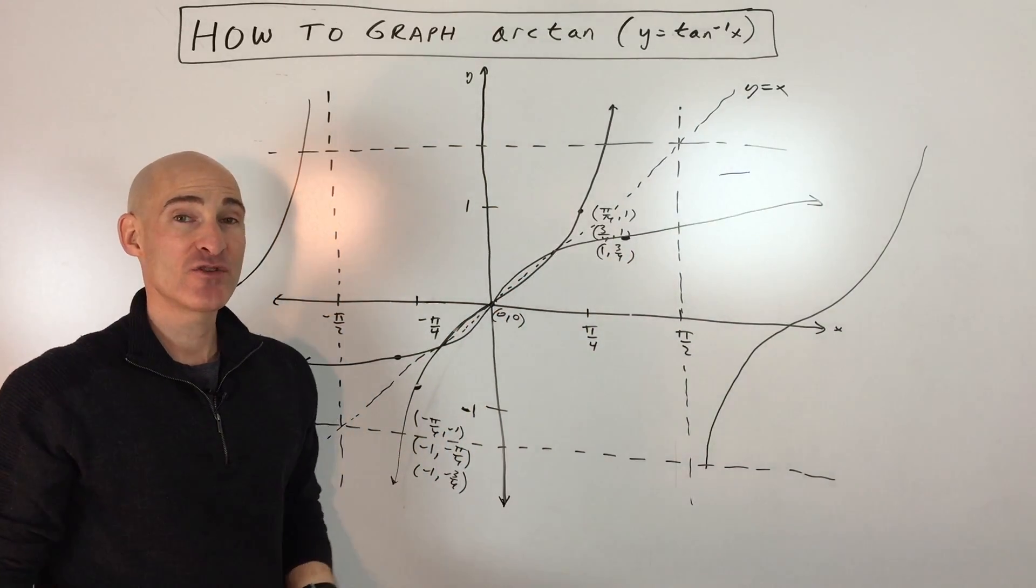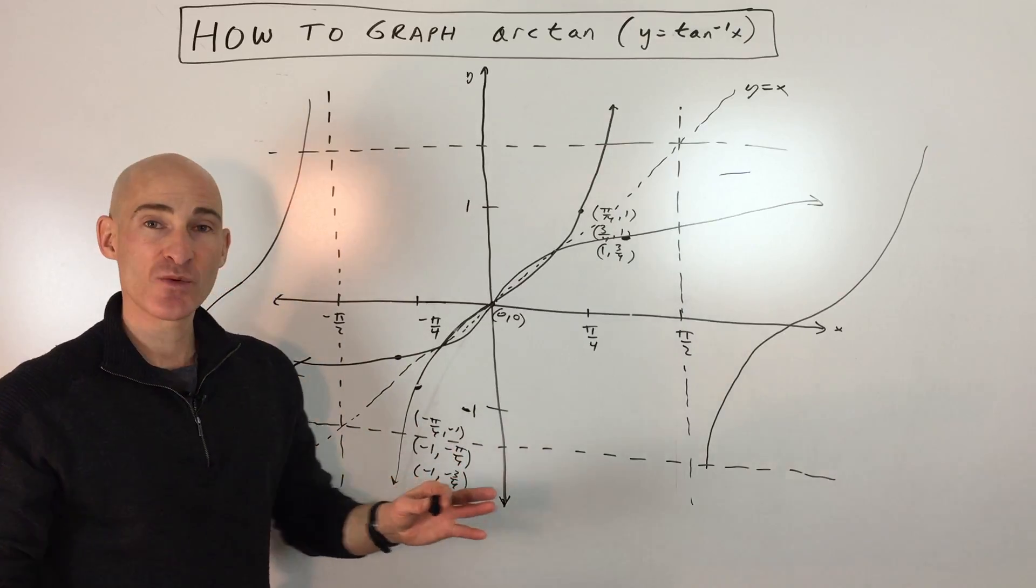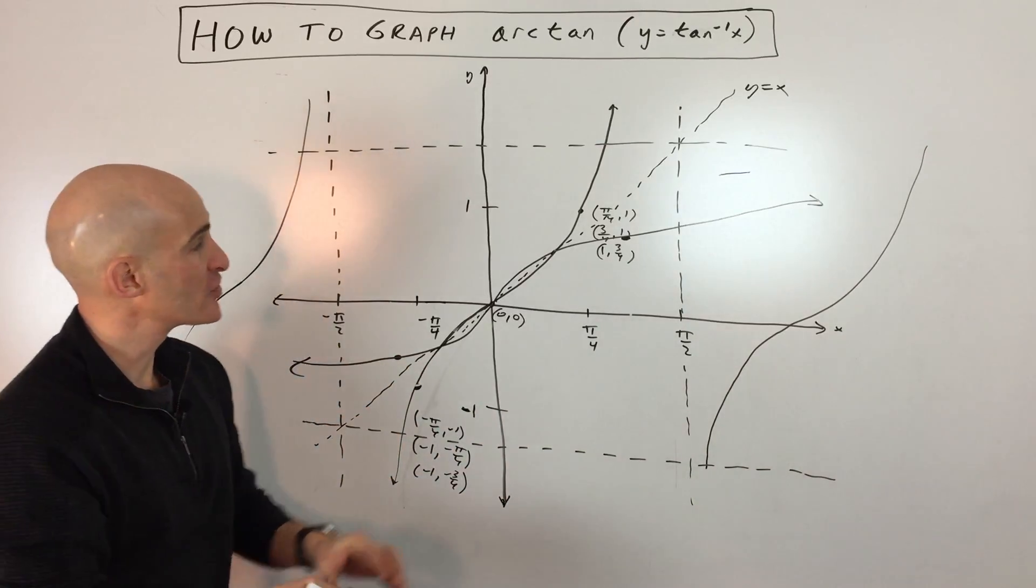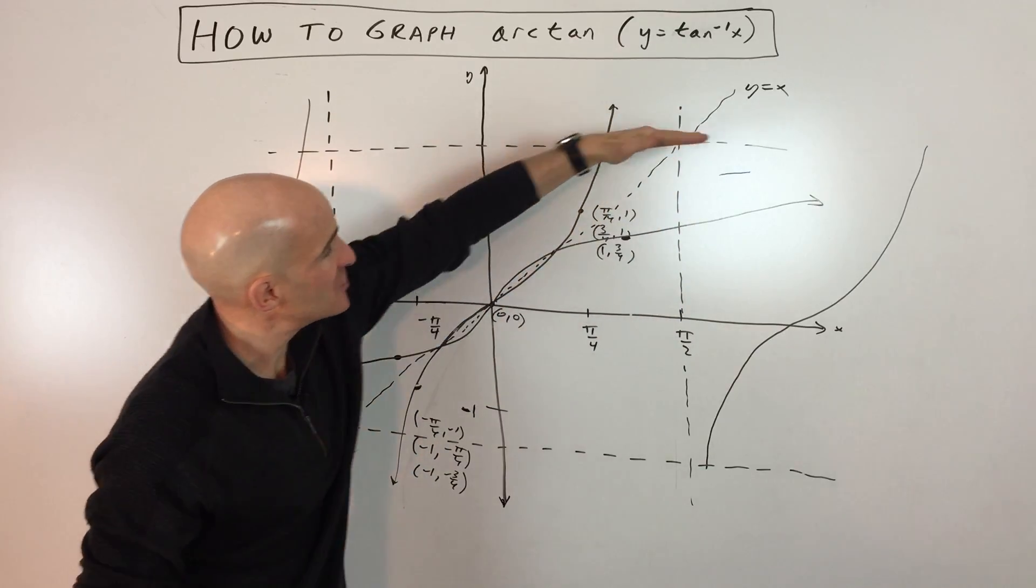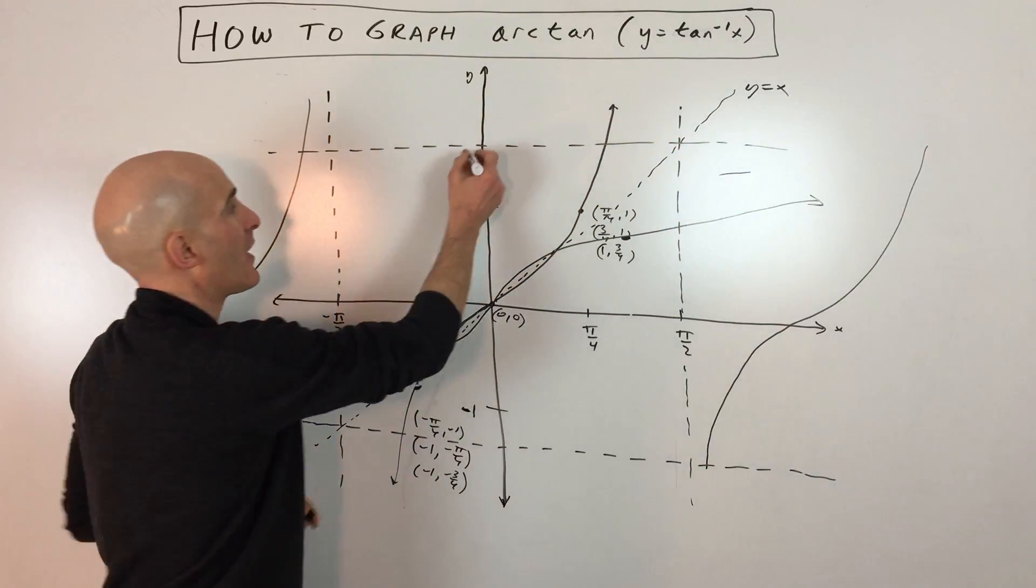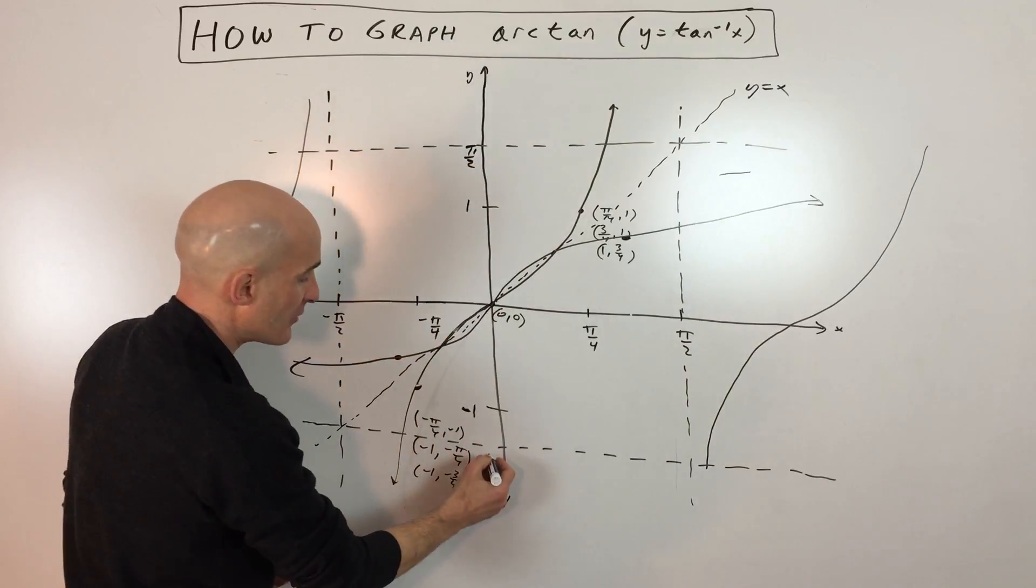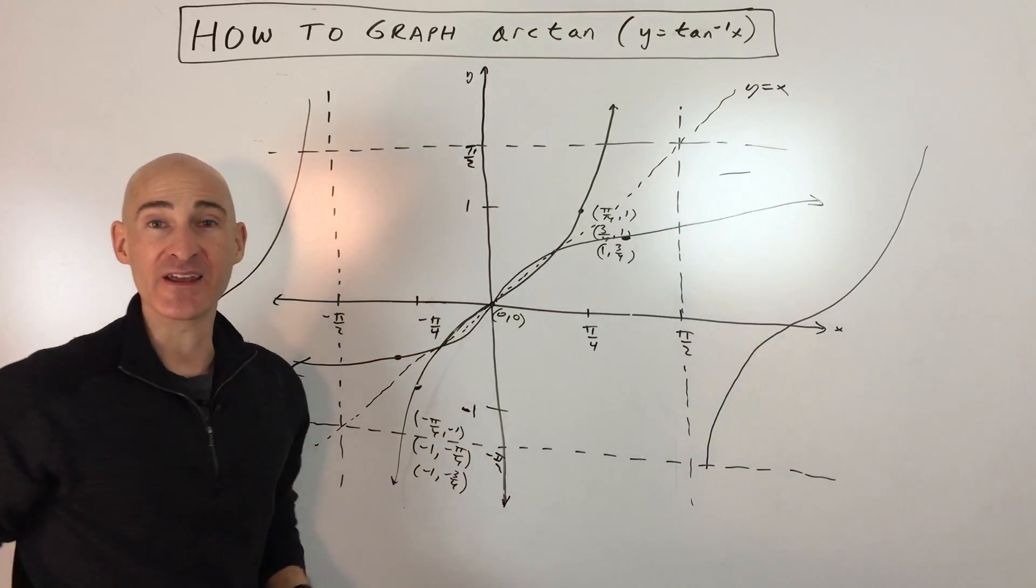So that's how you graph the arctangent or the tangent inverse. Just take those x and y values, interchange them, and then also make sure to take those asymptotes and reflect them over the line y equals x. You get these horizontal asymptotes up here at pi over 2 and negative pi over 2, and you've got it.